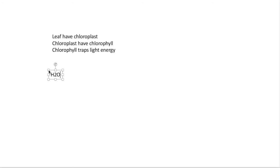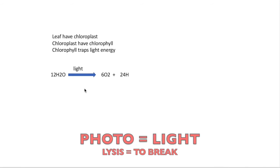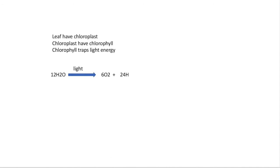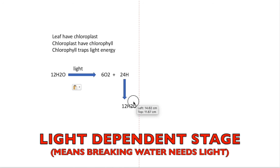This pigment traps light energy and uses it to perform photolysis of water—photo light, lysis to break something. They are breaking water into hydrogen atoms and oxygen molecules, and this oxygen is released from the plant. This is called the light-dependent stage.